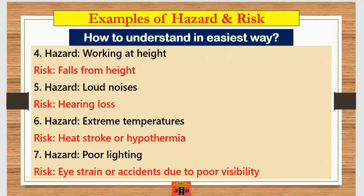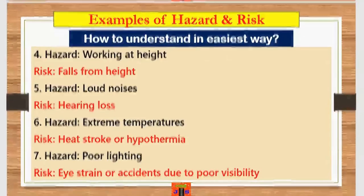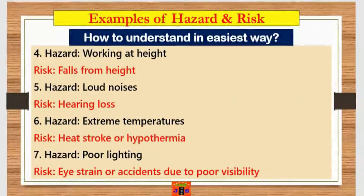Example five: on a construction site, a lot of machinery working in close proximity creates loud noise — the risk is hearing loss. Example six: extreme temperatures, either cold or hot, are a hazard; the risk is heat stroke or hypothermia. Example seven: poor lighting is also a hazard, and the risk is eye strain or accidents due to poor visibility.